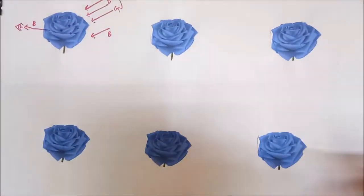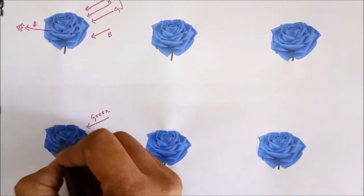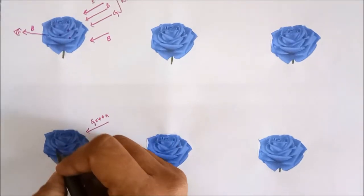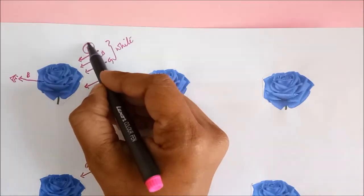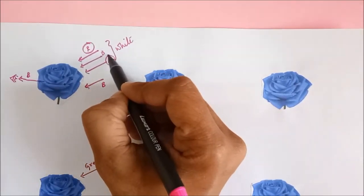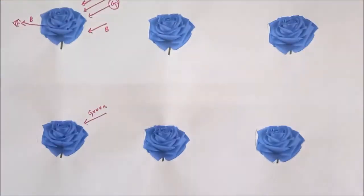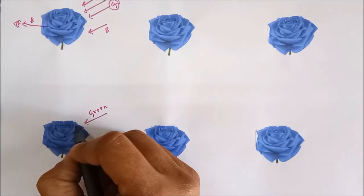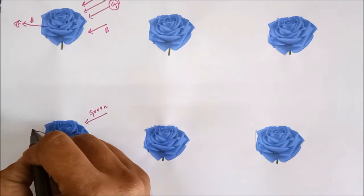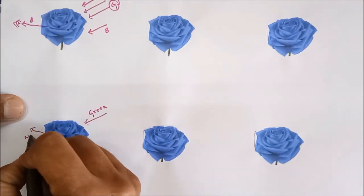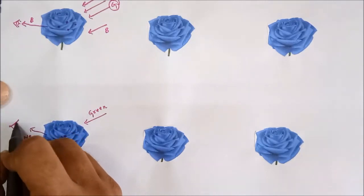Now let us incident green light on the blue rose. These pigments absorb red and green colors, so when we incident only green light, the pigments absorb the green light entirely. Nothing reaches your eye, so the appearance in this situation is black.